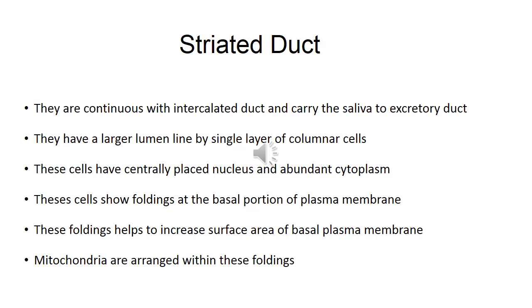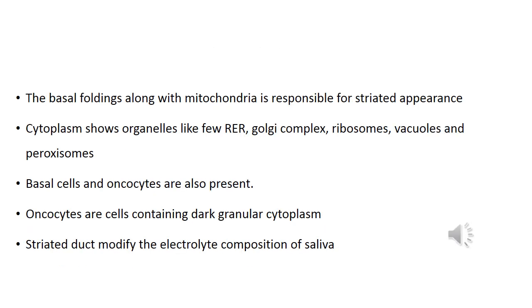Mitochondria are basically arranged within these foldings. The basal foldings along with the mitochondria are responsible for the striated appearance — that is why the duct is known as striated duct. The cytoplasm shows organelles like few rough endoplasmic reticulum, Golgi complex, ribosomes, vacuoles, and peroxisomes. Basal cells and oncocytes are also present.